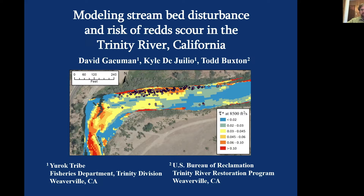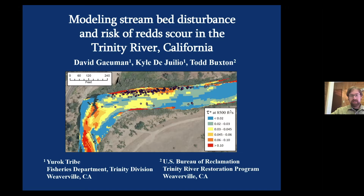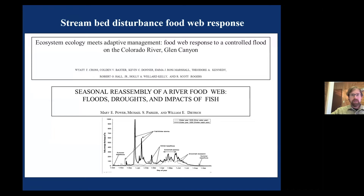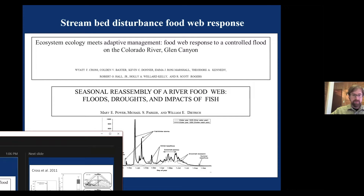We're going to talk about the risk of redd scour and the benefits of stream bed disturbance on the Trinity River. This topic has garnered new interest related to recent recommendations to change the timing of our scouring flows. Recent literature has identified that stream bed disturbance can elicit a food web response that can favor different species — some favoring fish, others favoring grazers that might not be accessible to fish, limiting the transition of resources from secondary to tertiary production.